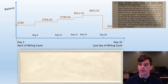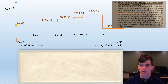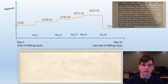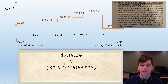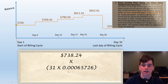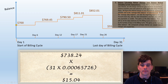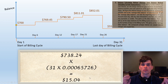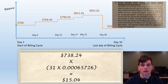What do we do with that value? We figure the interest charge by applying the periodic interest rate to the average daily balance. So it's 31 days times the daily interest rate times the average daily balance of $738.24, which equals $15.04. That is your true, exact interest charge for this month of credit card usage.